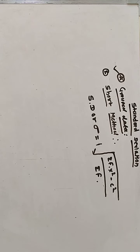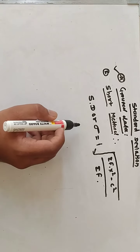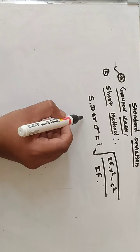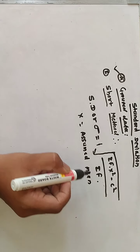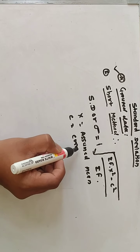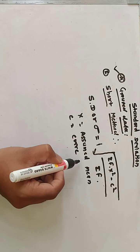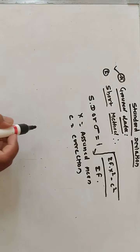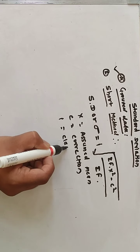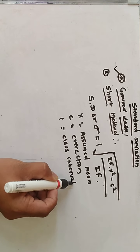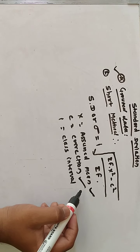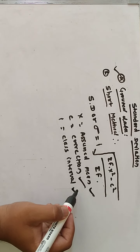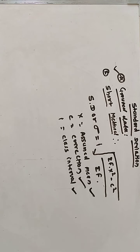Here x is equal to deviation calculated from the assumed mean. c means correction and i means class interval. These two methods are used for calculating standard deviation for grouped data.